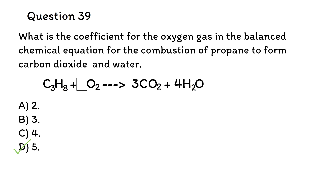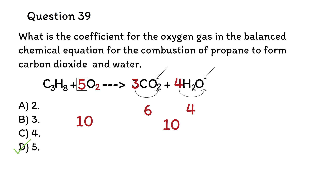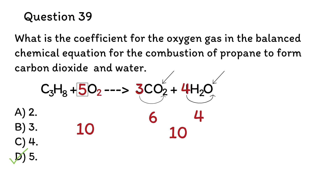We need the number of oxygen atoms to be the same on both sides. On the right side, oxygen is found in carbon dioxide and water. For carbon dioxide, we have 3 times 2, giving 6 atoms of oxygen. For water, we have 4 times 1, giving 4 atoms of oxygen. The total is 10 oxygen atoms. To balance, we need 10 oxygen atoms on the left side, so we put 5 molecules of O₂ — the 5 multiplies the 2 to get 10. The equation is now balanced. It's important to practice more examples on this.